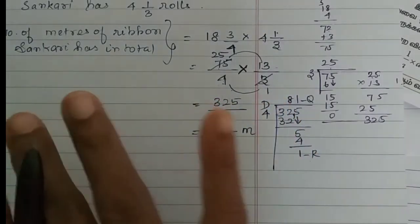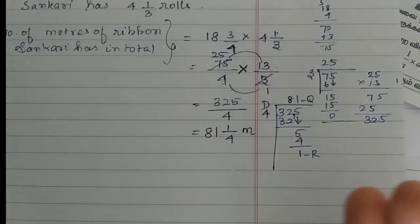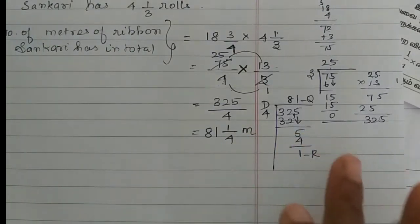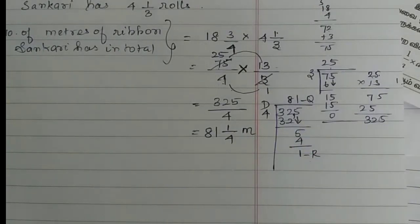So total 4 1 by 3 rolls is equal to meters, 81 1 by 4 meters. That's all.